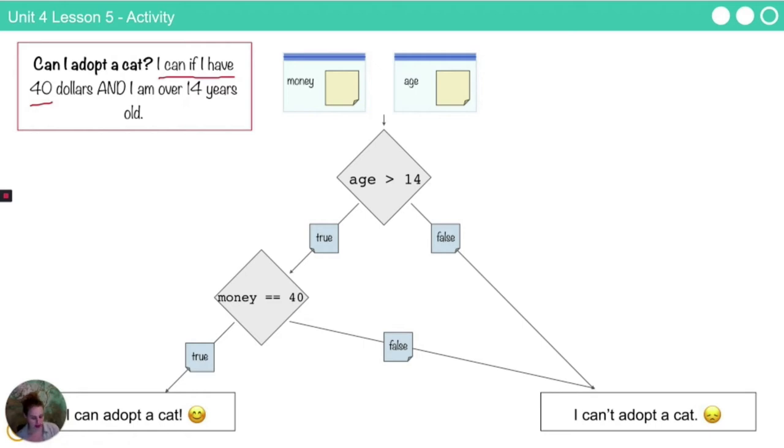So in this particular case, particularly when we're transitioning to a Boolean expression, we're checking if money is exactly the value of $40, not if it's greater than or equal to $40, which you may have written down.